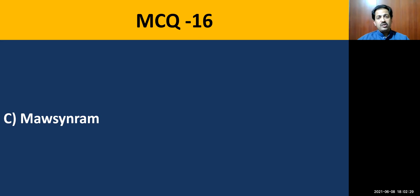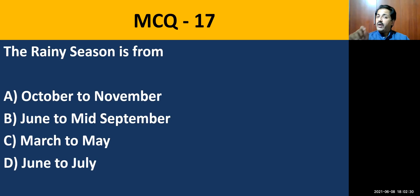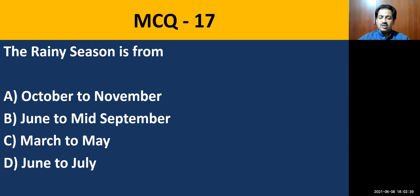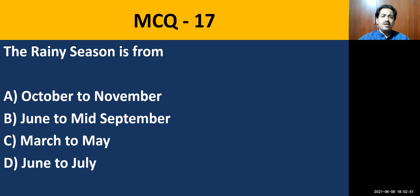MCQ question number seventeen: the rainy season is from — you need to mention the correct months. The easiest question — it is June to mid-September.